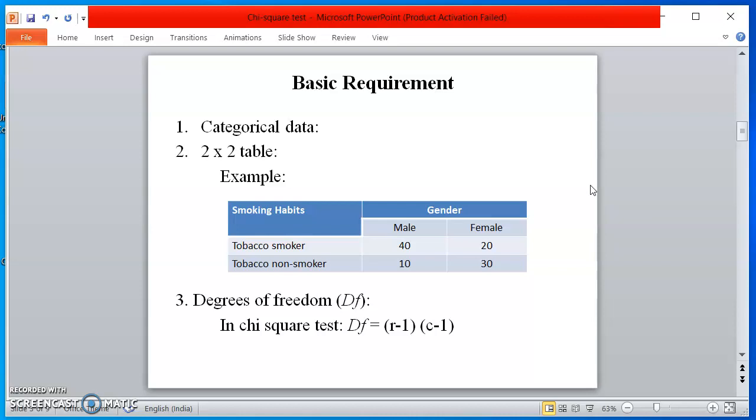I want to tell you a few basic requirements to do chi-square test. Number one, to do a chi-square test, you should have categorical data. Categorical data has certain categories. For example, gender commonly has two categories: male and female.